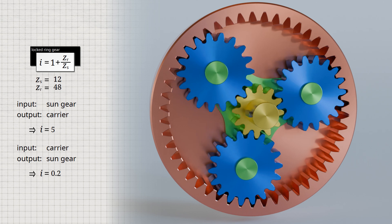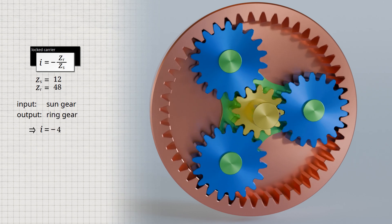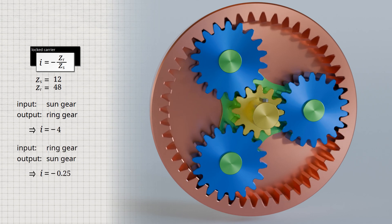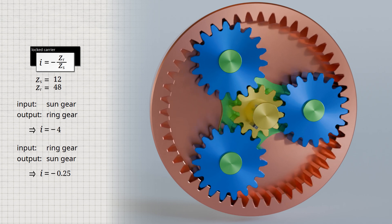The second largest transmission ratio of 4 results if the sun gear is still used for the input, but this time the carrier is firmly locked and the ring gear is used for the output. The second lowest transmission ratio is obtained by interchanging the input and output shafts, giving a ratio of 0.25. However, the direction of rotation between the input and output shafts is different in both cases. Mathematically, the transmission ratio in such a case is also given as a negative value.